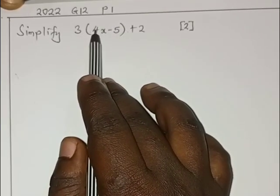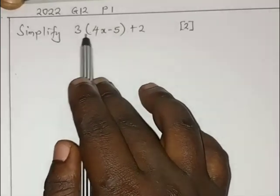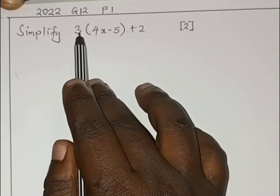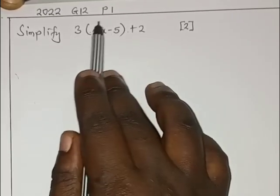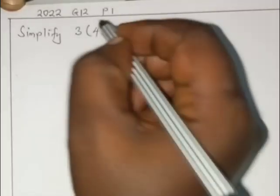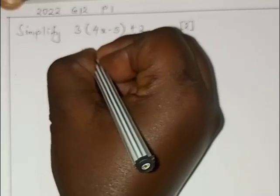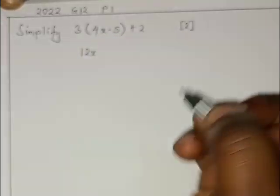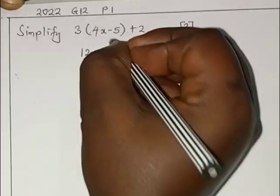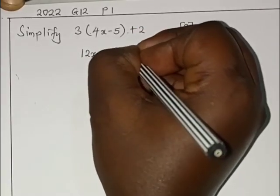In this case we are multiplying 3 which is outside the brackets with everything that is inside here. So you start 3 times 4x, this will give you 12x, so you write 12x. Then minus 3 times 5 will give you 15, write 15. Then outside there's plus 2.